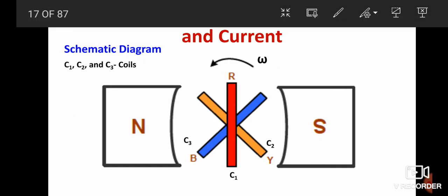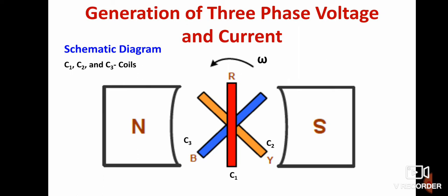Let us understand the method of producing three-phase voltage and current. It works based on Faraday's laws of electromagnetic induction. Consider a permanent magnet with a north pole and a south pole. The magnetic field is produced between these poles. The group of magnetic lines of force coming from the north pole and terminating at the south pole is called magnetic flux. Therefore, magnetic flux travels from north pole to south pole.